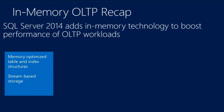First, we have memory-optimized table and index structures. Data is not organized in pages. Rows are the atomic unit, and rows are always addressed through 8-byte memory pointers. That's the way we navigate through memory. You can always address every row directly through this 8-byte pointer — no need to navigate a tree, navigate pages, or navigate files, because everything is in memory.